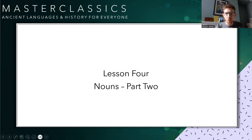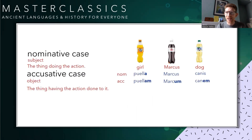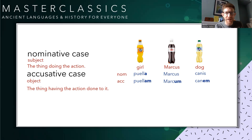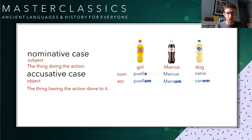Last week, we spent our time looking in detail at two cases. Cases are a property of nouns — a bit like verbs have tenses, person, and number. Nouns also have properties, and an important one is case. It's so important because it tells you what that word is doing in the sentence. We looked at the nominative case, which belongs to the subject — that's the thing doing the action — and the accusative case, which belongs to the object — that's the thing having the action done to it.